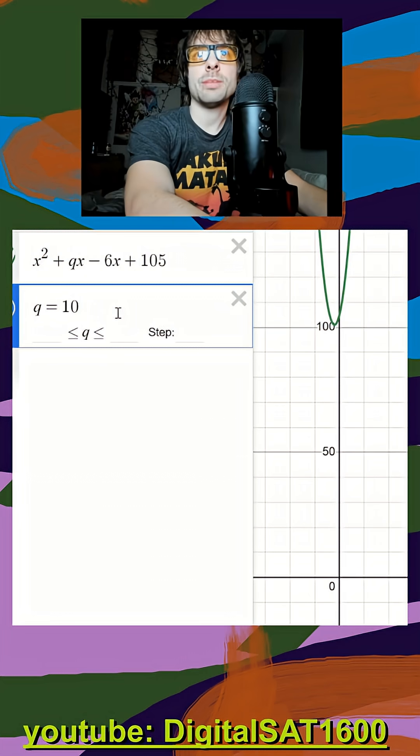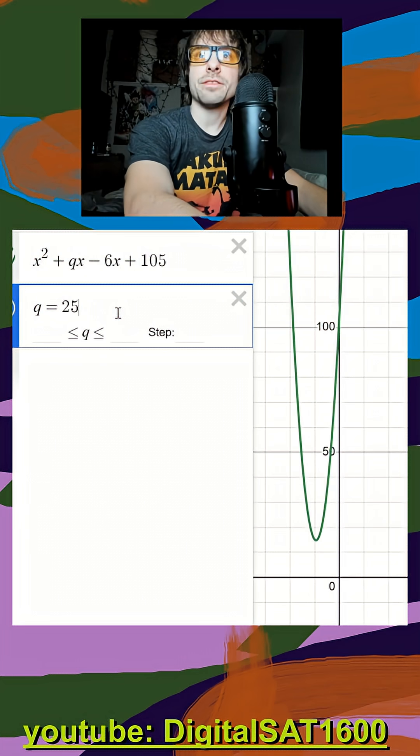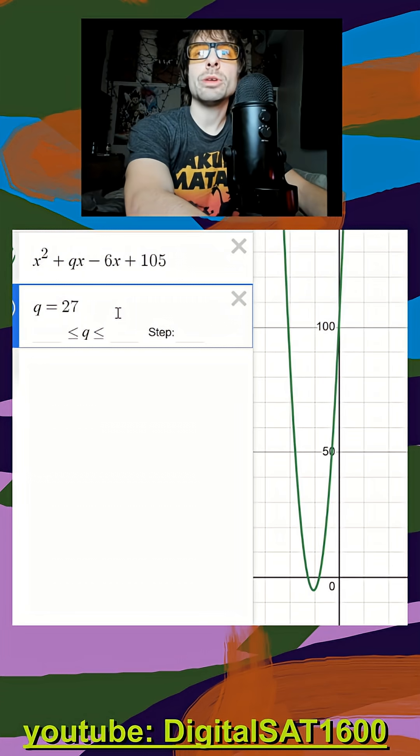And then we just throw in some random numbers here, like 20, maybe 25, 26. And you can see we want no real solutions. We want no intersections. And it was an integer constant.